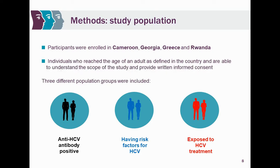The recruitment strategy identified three distinct groups: people who are antibody positive for hepatitis C; people at risk of hepatitis C with risk factors such as injection drug use, tattoos, MSM, or HIV positive status; and people who had already been exposed to treatment with DAAs. These three groups informed our sample collection and analysis.